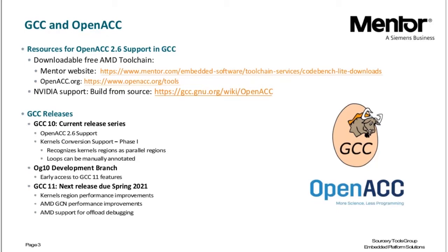GCC releases happen once per year for big releases. GCC 10 includes OpenACC 2.6 support and the first work for better OpenACC kernels support. There is also the OG10 development branch, our development branch where we commit ongoing work, currently based on GCC 10. Over the year we accumulate changes to merge into the GCC mainline branch, which will be released as GCC 11 next spring. That will include the OpenACC kernels improvements, various performance improvements, the AMD debugging support, and many bug fixes.